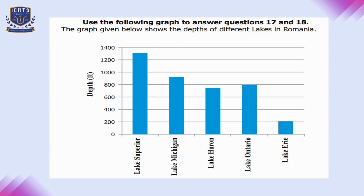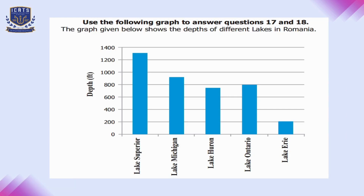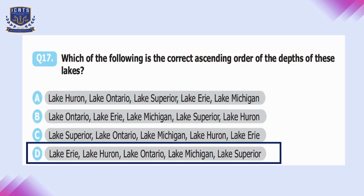Use the following graph to answer questions 17 and 18. The graph shows the depths of different lakes: Lake Superior, Lake Michigan, Lake Huron, Lake Ontario, and Lake Erie. Question 17 asks for the correct ascending order of depths. Ascending means smallest to greatest: Lake Erie, Lake Huron, Lake Ontario, Lake Michigan, and Lake Superior. Option D is correct.